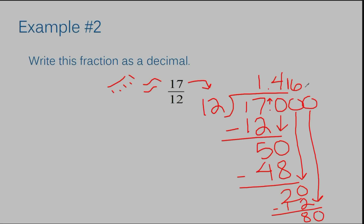For this particular example the answer does not end, and this happens a lot when we're turning a fraction into a decimal. So sometimes you just have to stop and round your answer. Usually the directions will tell you; they either have the answers work out to nice clean answers, or they want you to round to a certain position. In this case the directions didn't specify, so let's just round to the first two decimal places. This six causes the one to round up, so this answer would be one and forty-two hundredths, or 1.42.